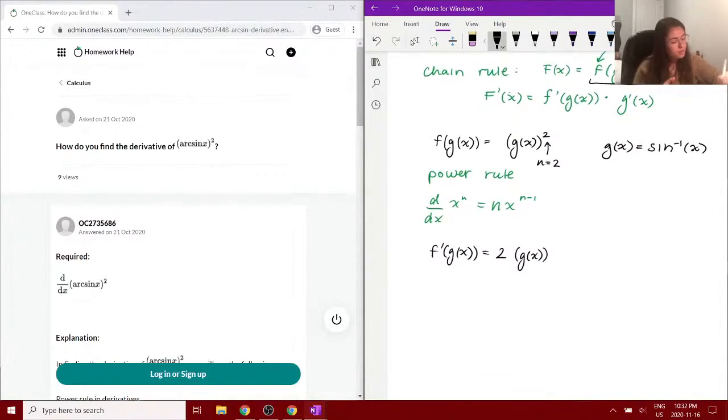And now you can essentially sub in what g of x is, as we said up here. We know what g of x is already. That's the inverse sine of x. Obviously, you could have subbed it in here right away. I just wanted to leave it out in case that would be confusing. We know exactly what g of x is and f of g of x.